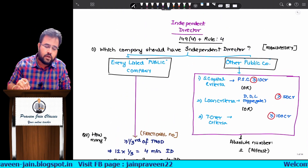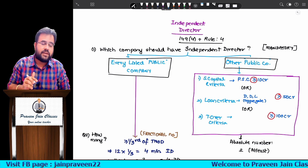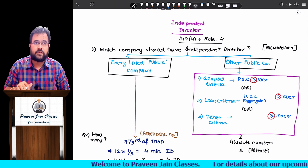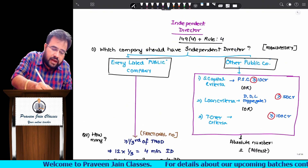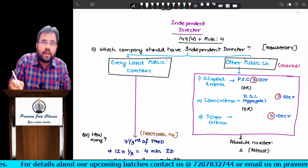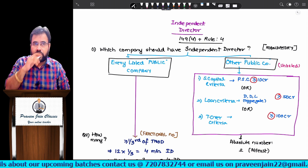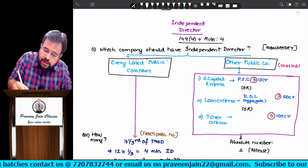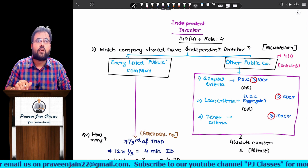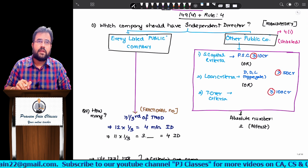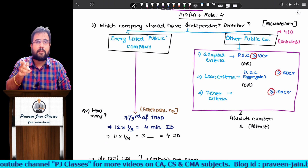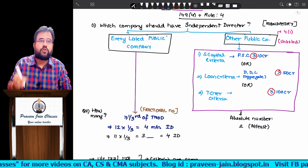Which companies should have independent directors? On one side you have every listed public company; on the other side you have other public companies — which will be unlisted. These other public companies are given in the Rules. To remember them: das, pachas, sao — meaning 10 crores, 50 crores, 100 crores. If a company's paid-up share capital is 10 crores or more, it should have independent directors. Or if that company's DDL — outstanding deposits, debentures, and loans — exceed 50 crores, they should appoint independent directors. Or if a company's turnover is 100 crores or more, they should also appoint independent directors.